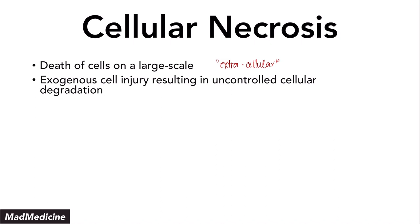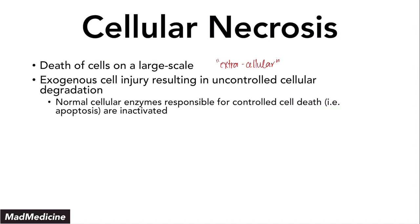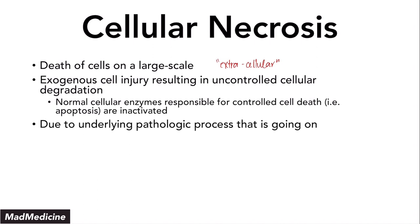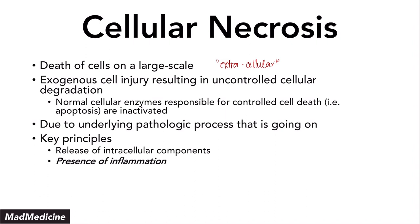Because the injury is happening from outside of the cell, the cells themselves do not want to die, so they are going to inactivate their intrinsic apoptotic mechanisms. The normal cellular enzymes responsible for controlled cell death will be inactivated because the cell doesn't want to make it easier for the exogenous insult to kill it. Usually this occurs due to some pathologic process, and a key principle is that you are going to have release of intracellular components, but also inflammation.